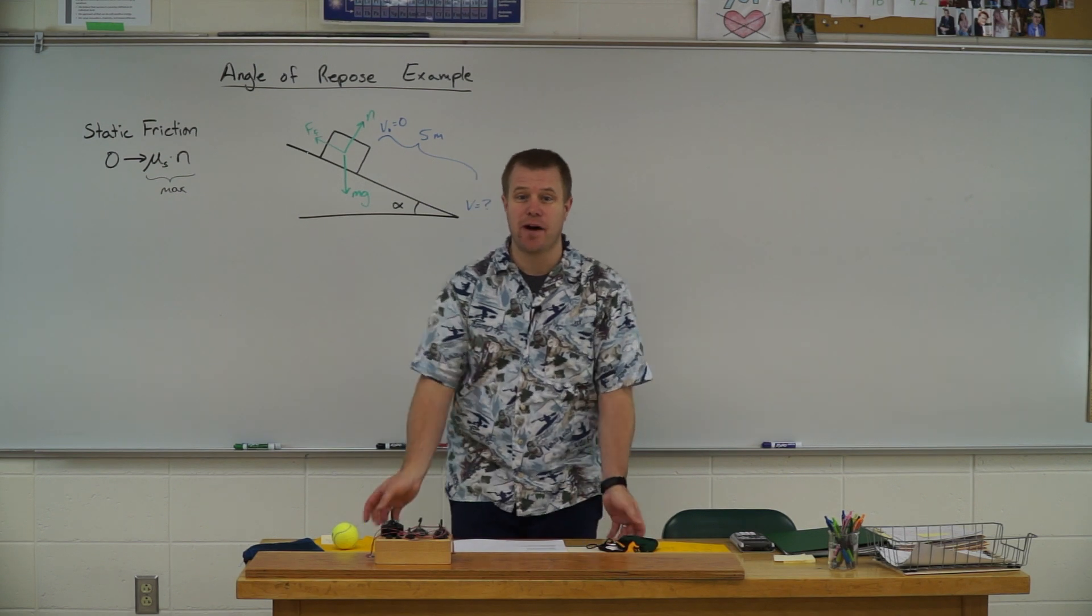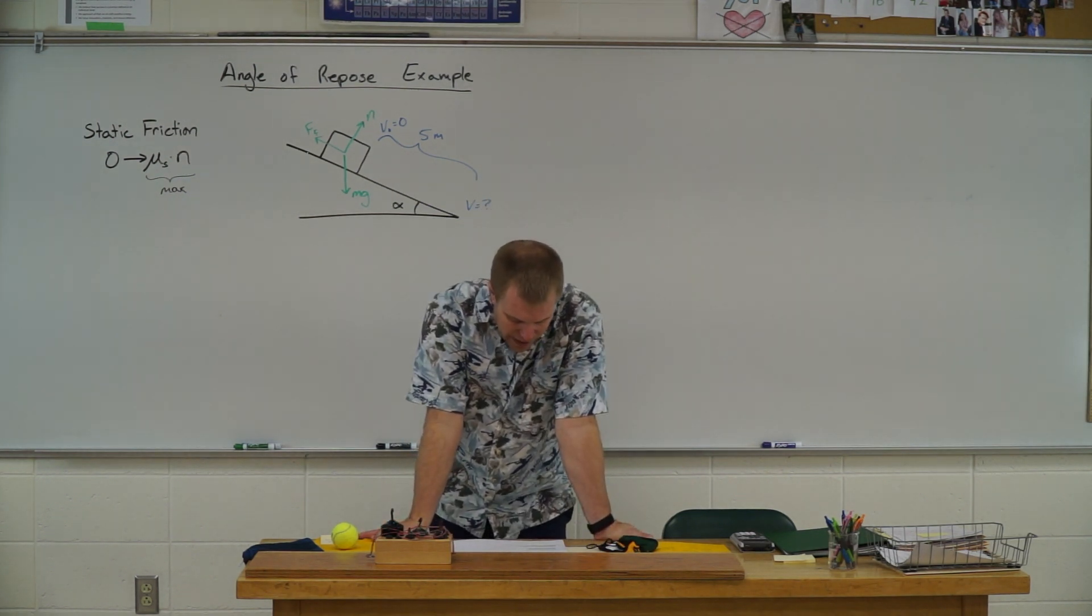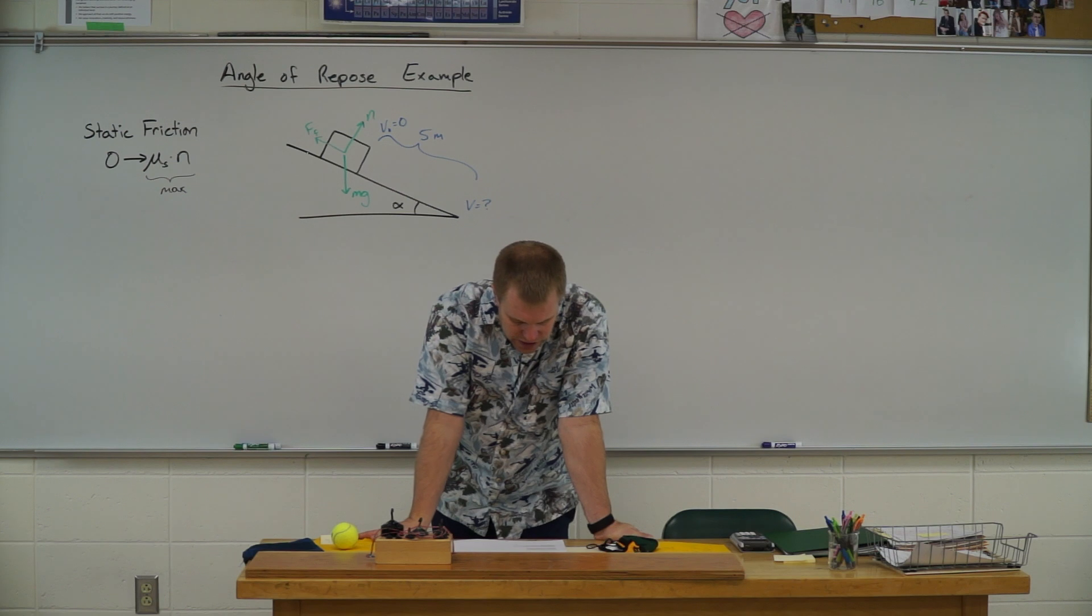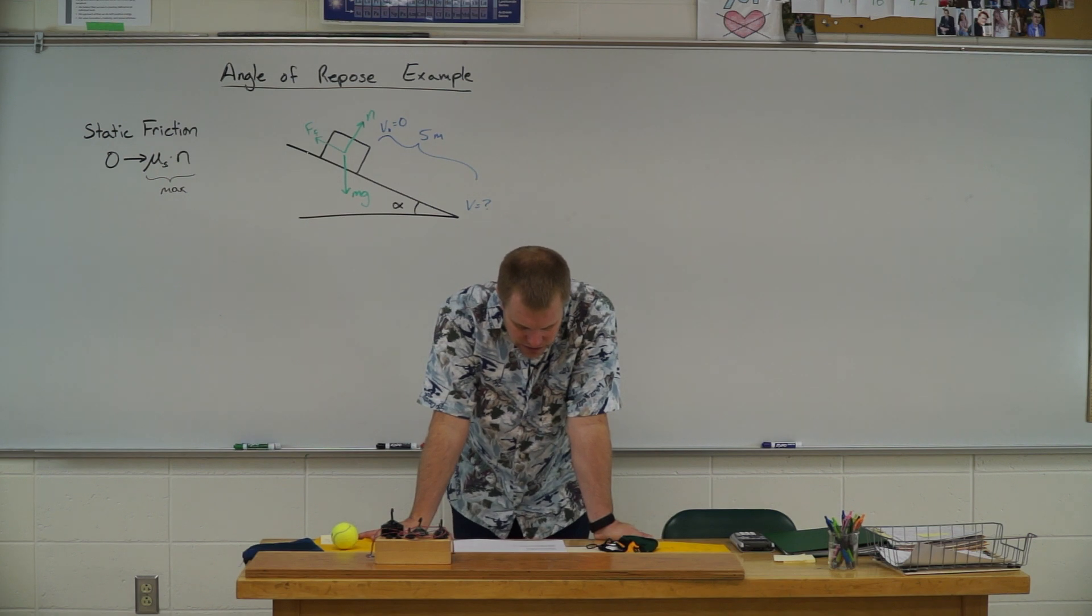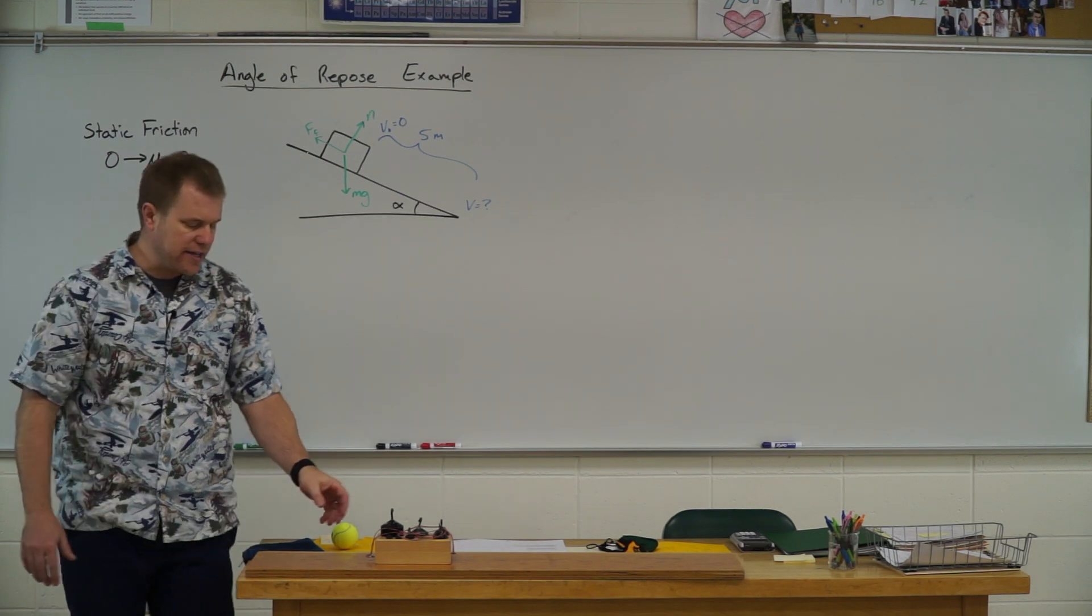Alright, so we're going to look at this example problem for angle of repose. Let's go ahead and read it. A 25 kilogram box of textbooks rests on a loading ramp that makes an angle of alpha with the horizontal. The coefficient of kinetic friction is 0.25 and the coefficient of static friction is 0.35. As the angle alpha is increased, find the minimum angle at which the box starts to slip.